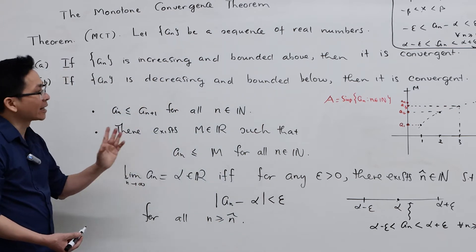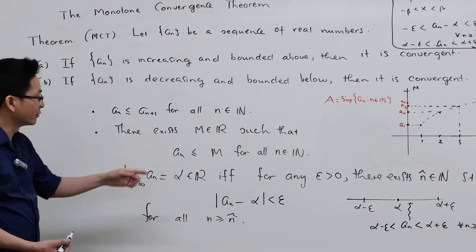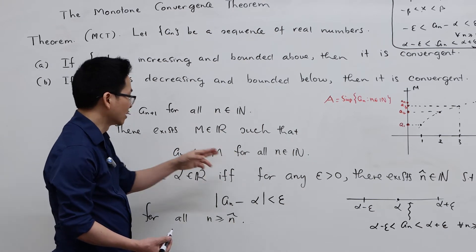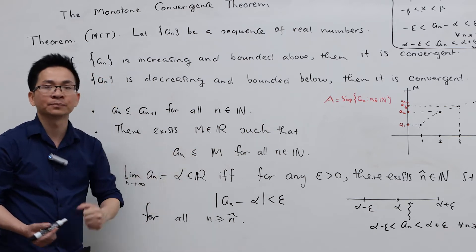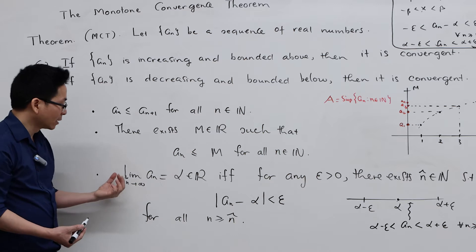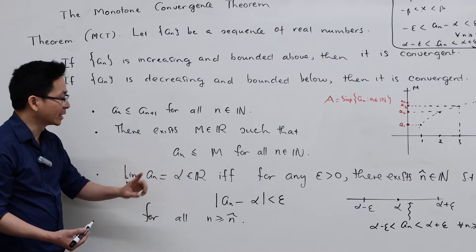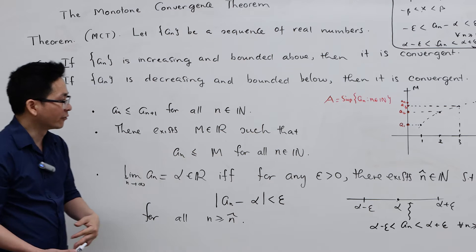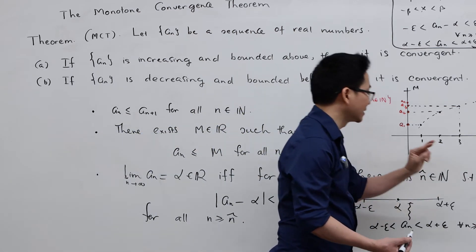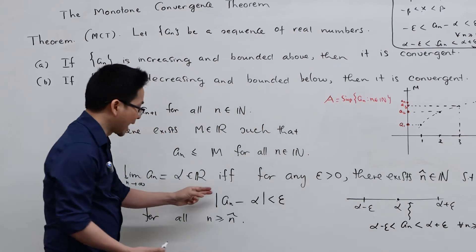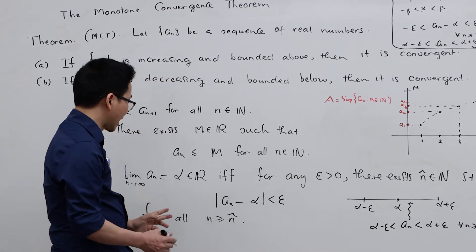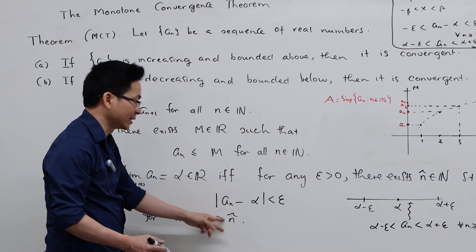We say that aₙ is bounded above if aₙ ≤ M for all n in ℕ, where M is a real number. And recall that aₙ converges to a real number α if for any ε > 0, there is some n̂ in ℕ such that |aₙ - α| < ε starting from that index.